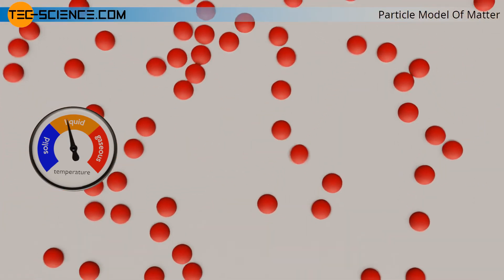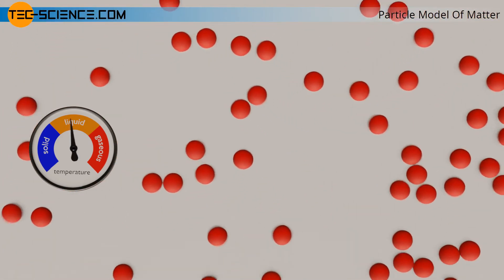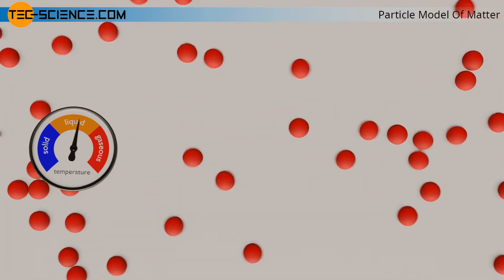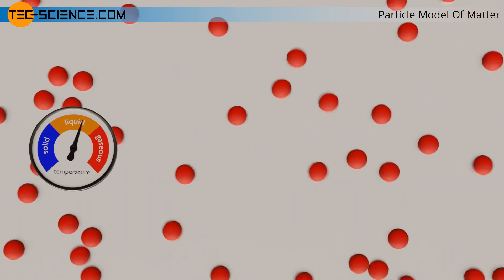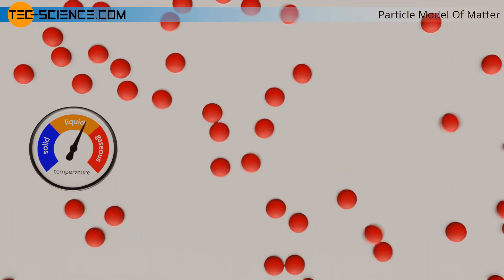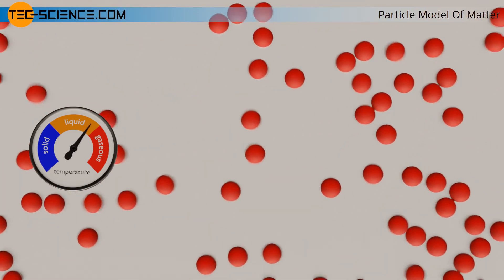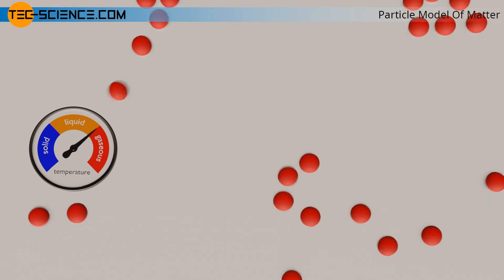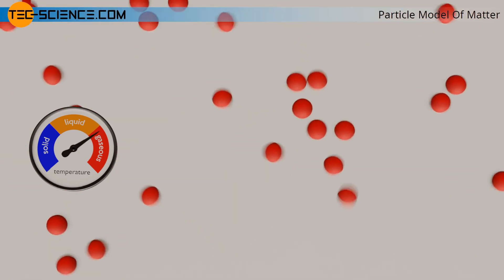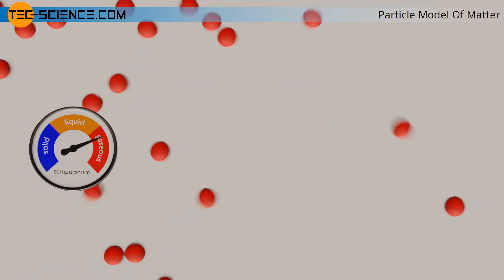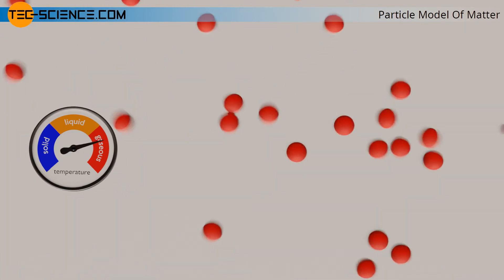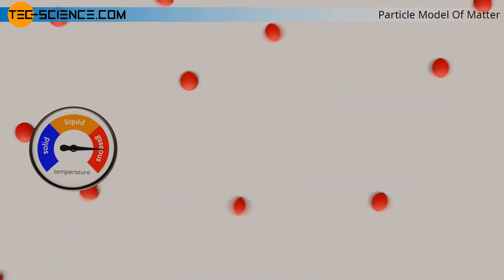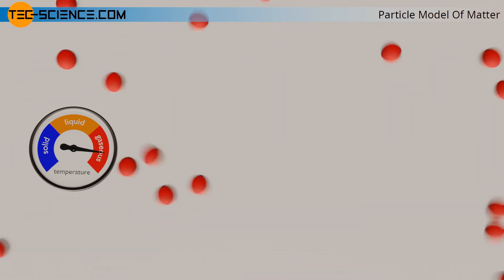If the now liquid substance is further heated, the particles move more and more violently. The distance between the particles increases accordingly, and the binding forces become even weaker as a result. Above a certain limit, the intermolecular binding forces have decreased to such an extent that the particles can move almost freely. The kinetic energy of the particles is greater than the binding energy that normally binds the particles together, so the particles can break away from the binding forces. The liquid vaporizes and becomes gaseous.